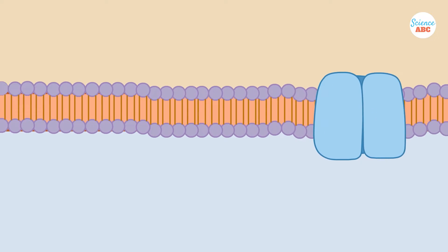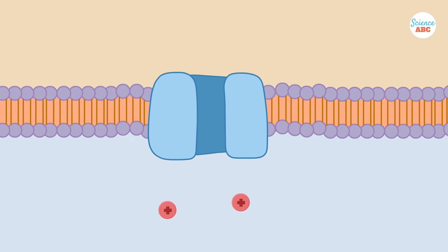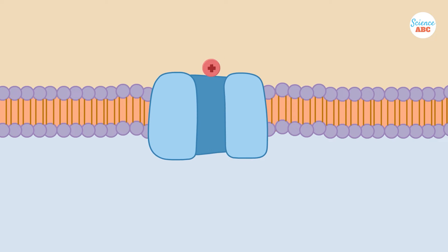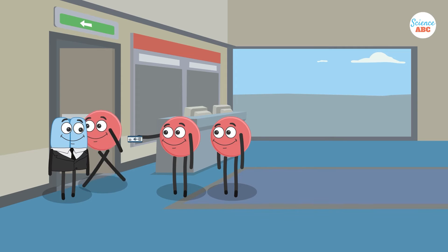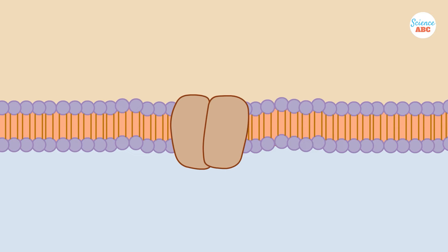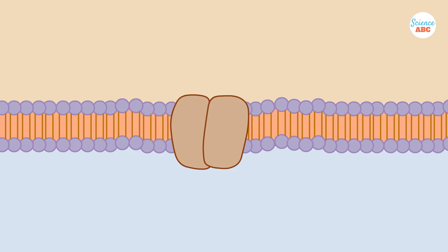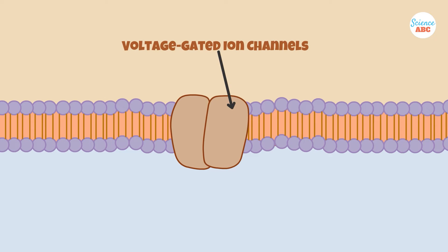This voltage of approximately negative 70 millivolts is referred to as the resting potential of a neuron. The cell membrane of the neuron contains ion channels. These are pores formed using proteins that selectively allow certain ions to pass through, similar to how an airport security guard checks visitors and only allows those with a ticket to proceed to their gates. Some of these channels are special in that they open and close only at a certain voltage. These are called voltage-gated ion channels.